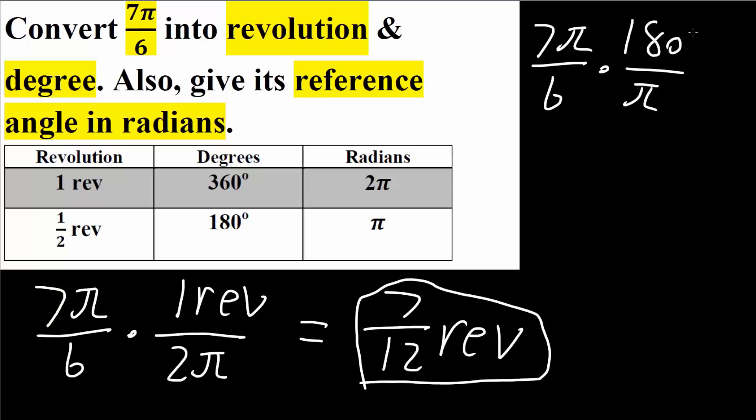π and π cancel, and we also have a 6 here. We can cancel the 6 out by dividing by 6, so we get 30 degrees. 30 degrees times 7 gives us 210 degrees.